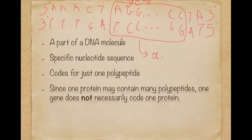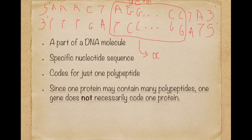Hemoglobin contains the alpha polypeptide and the beta polypeptide — 2 alpha and 2 beta polypeptide chains. Therefore, if this gene codes the polypeptide chain alpha, it doesn't mean it codes the hemoglobin protein. It's part of a DNA molecule — not the whole DNA molecule, just part. A DNA molecule has many, many genes.